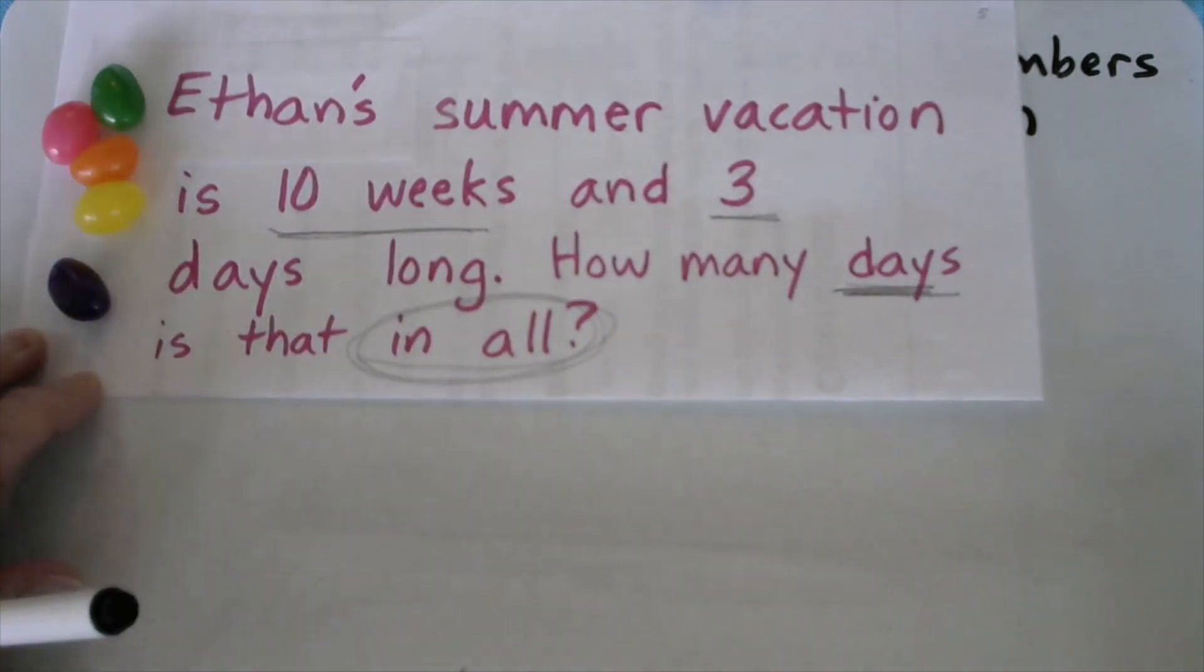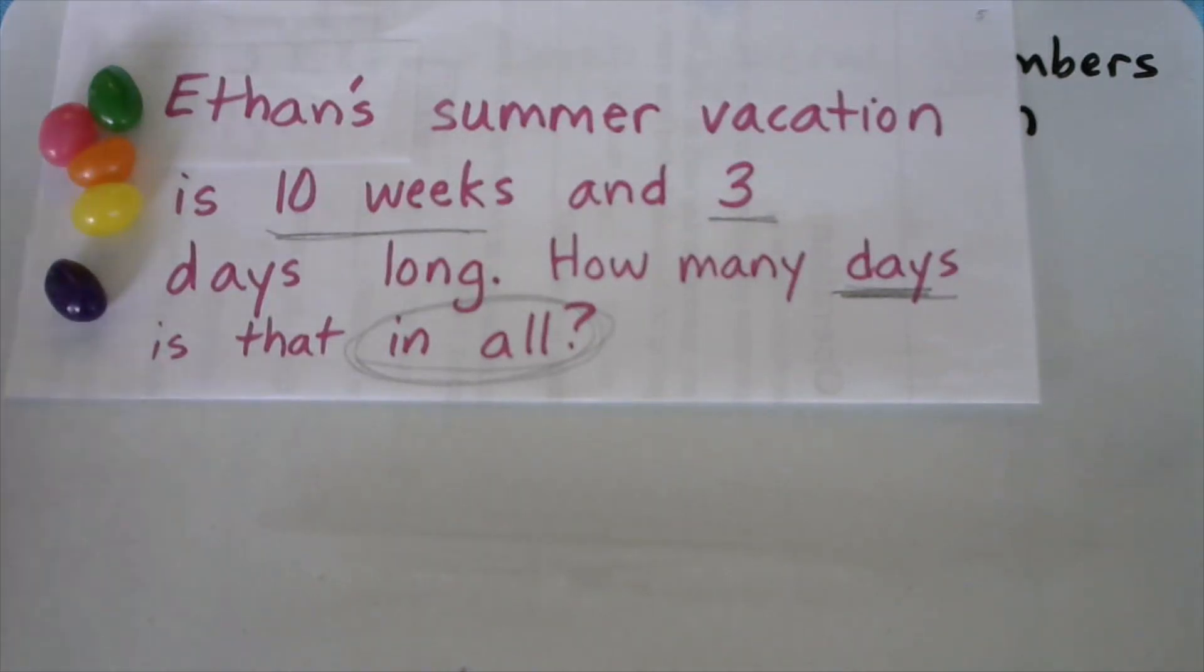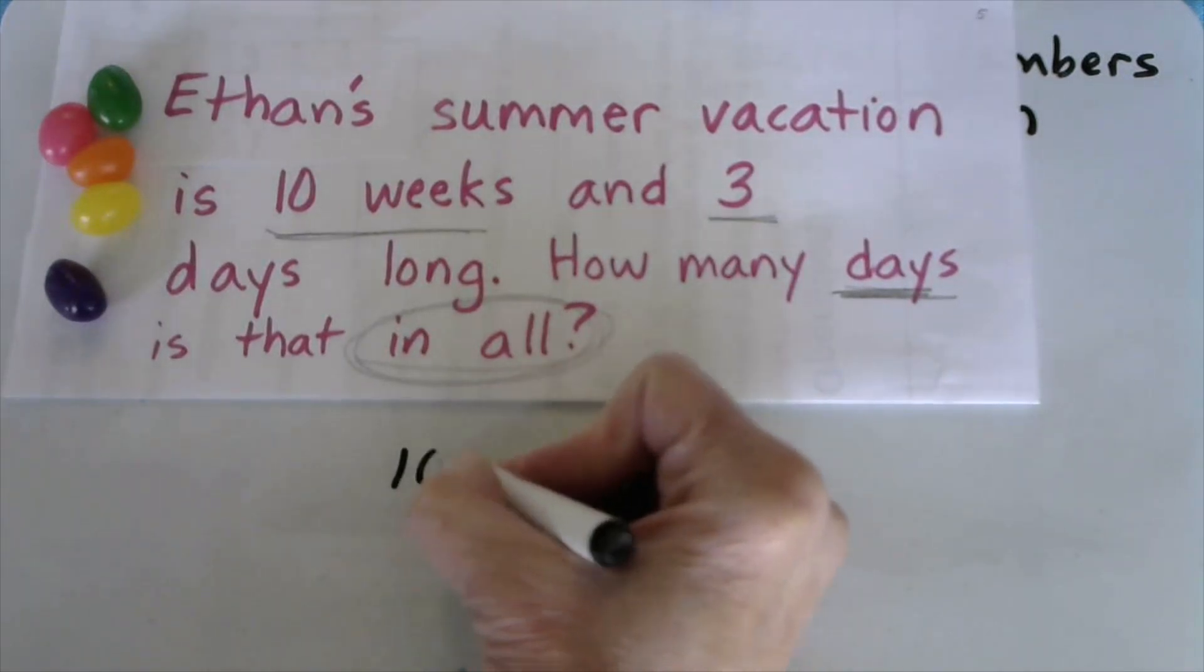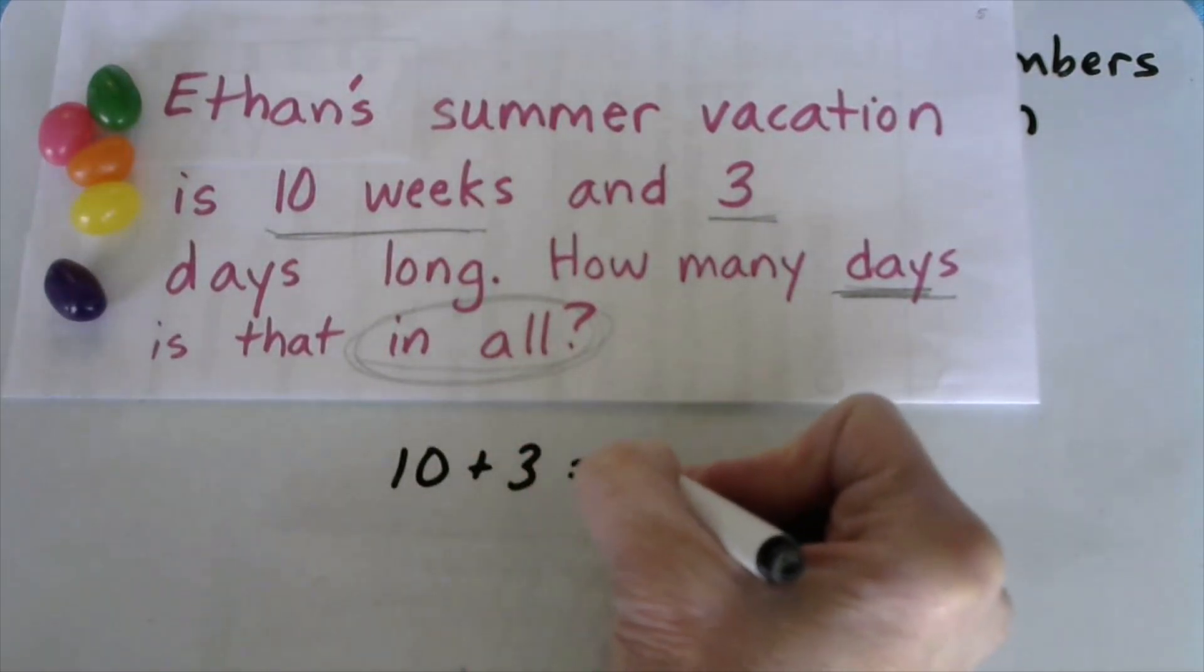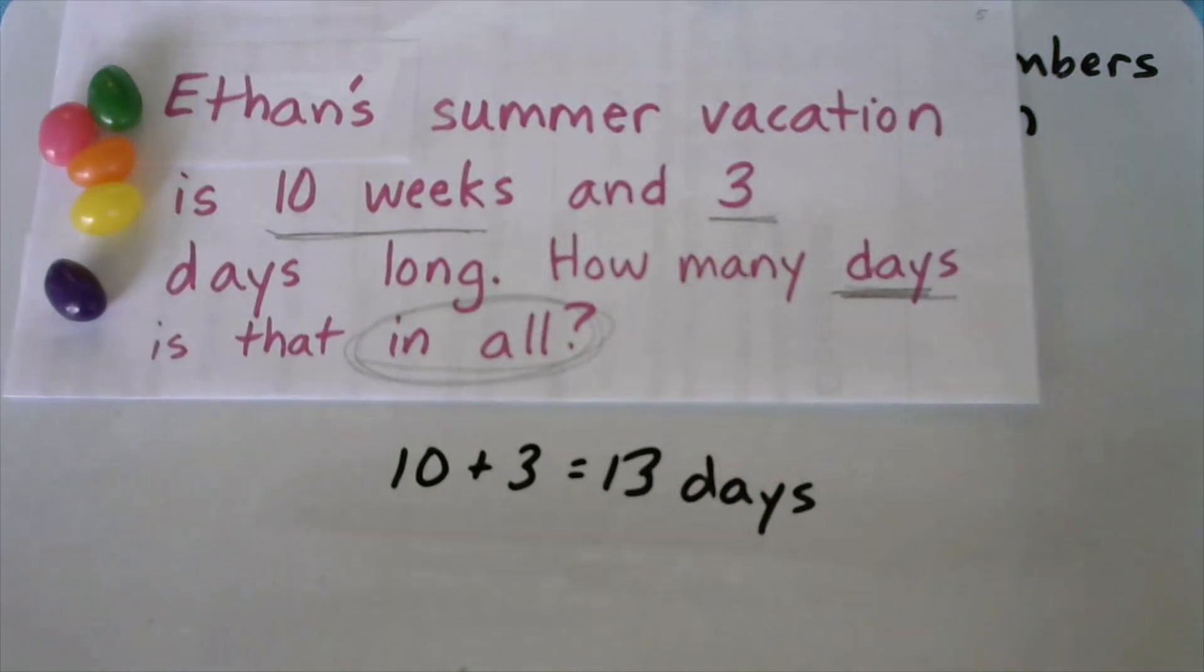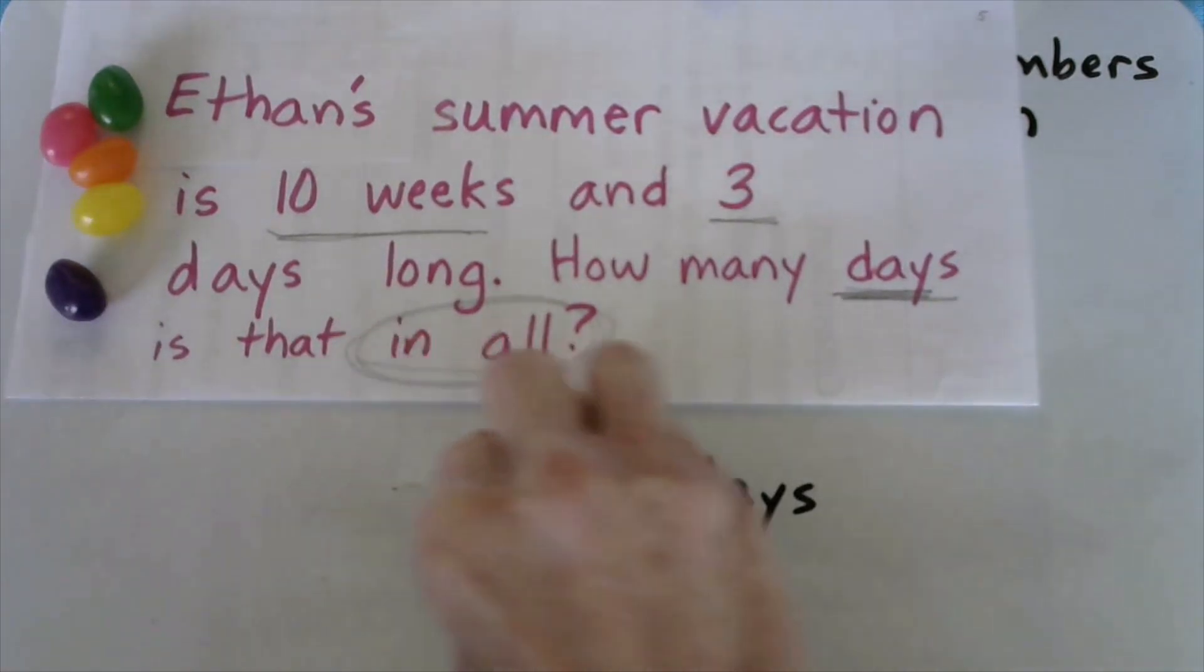So go ahead and think about where is the hidden number in this problem? Because you know a math zombie would write 10 plus 3 equals 13 days. Ethan gets off of school for 13 days. Poor Ethan. But no, we are not a codfish. So go ahead and pause the video. Find the hidden number and solve.